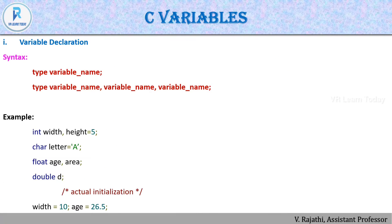Next, how to declare a variable. The syntax is: data type followed by variable name. You can declare multiple variables by separating them with commas. For example: 'int width, height = 5;' for integers, 'char letter = 'a';' for characters, 'float a, area;' for floats, and 'double day;'. You can declare and assign values at the same time or separately. For example, 'width = 10' and 'age = 26.5' are initializations — assigning and initializing have the same meaning.